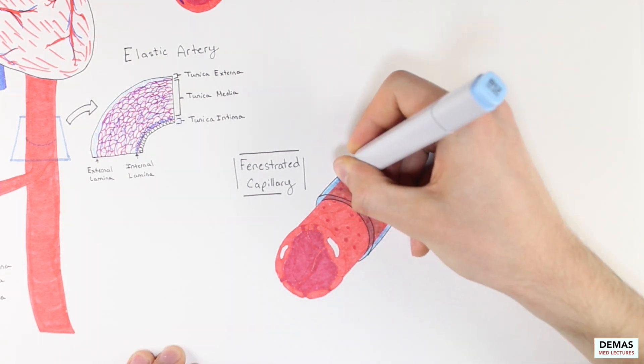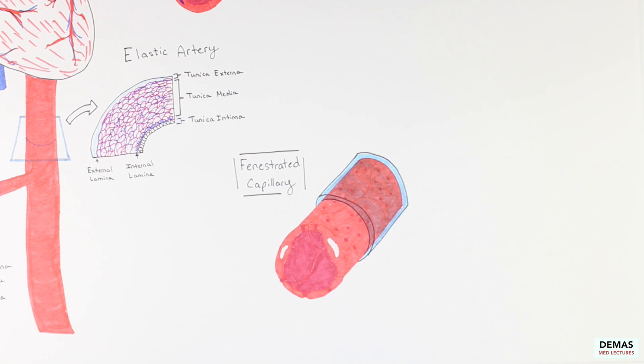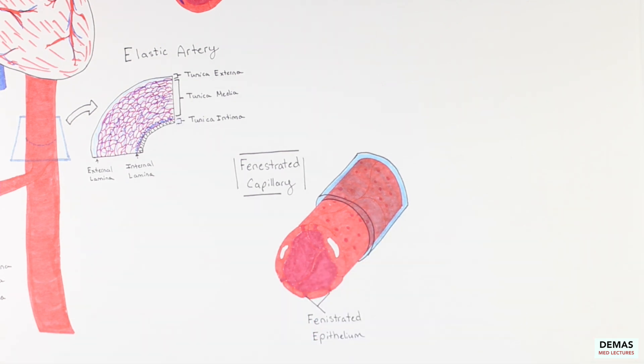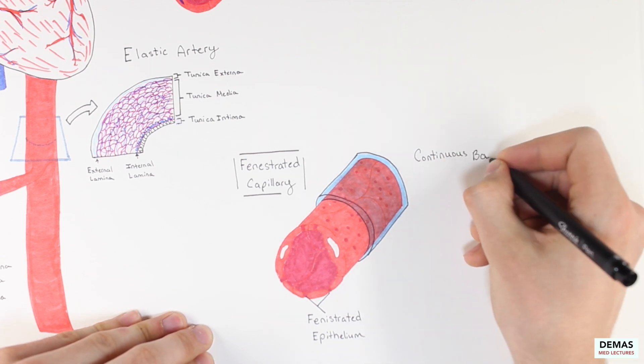Fenestrated capillaries, as you may have noticed, have microscopic pores or fenestrations in their endothelial layer. However, they have a continuous basal lamina.